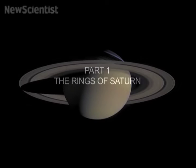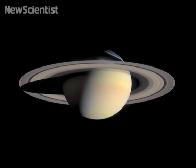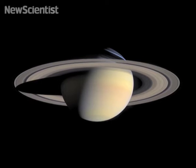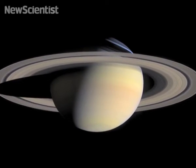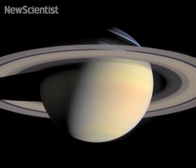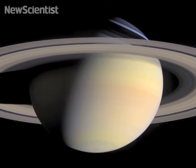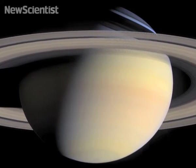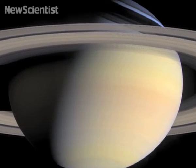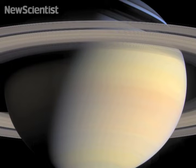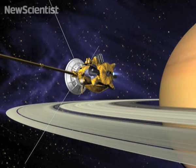Cassini arrived at Saturn on June 30, 2004 after traveling seven years across the solar system and flew within 15,000 kilometers above the dark side of the rings. During this period we slowed the spacecraft down so that it could be captured into Saturn orbit.